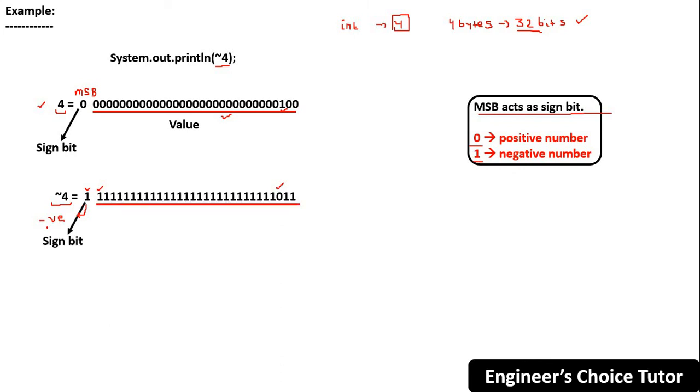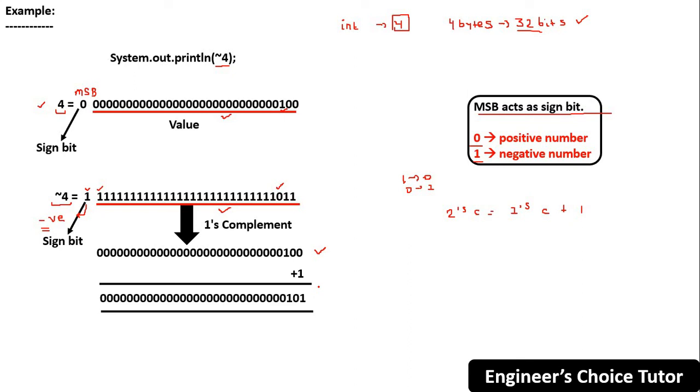The point is negative numbers will be represented indirectly in memory in 2's complement form. Now for this value you have to find out the 2's complement form. Basically, 2's complement form equals 1's complement plus 1. So first find out the 1's complement of this. 1's complement means change 1 to 0 and 0 to 1. Invert all the bits, so now this is the 1's complement. Now you have to add 1, then you will get 2's complement. This is the 2's complement.